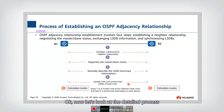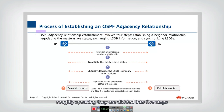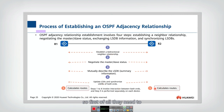Now let's look at the detailed process of how to establish an OSPF adjacency. Roughly speaking, they are divided into five steps, and we will introduce them one by one. First of all, they need to set up the neighbor relationship.